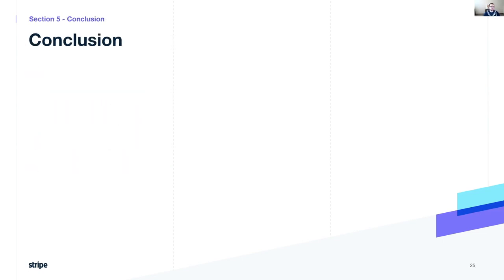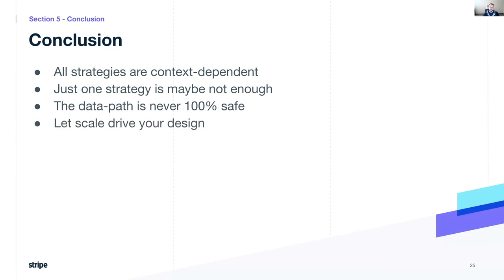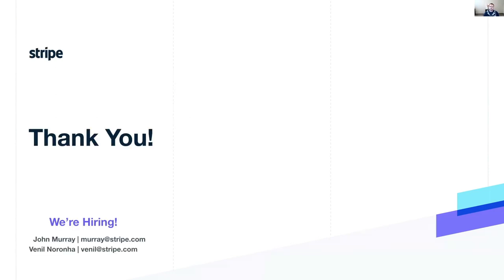So what are the conclusions we can draw? First, all strategies are going to be context dependent — depending on your business use cases and needs, the particular approach or combination of approaches you take will depend on the outcomes you're trying to drive. Another takeaway is that just one strategy may not be enough. Some sort of active-passive health checking combination is likely the best approach for the most holistic health checking strategy. However, it's important to keep in mind the data path is never 100% safe — retries and hedging will continue to remain relevant and useful tools. And lastly, let scale drive your design. Don't over-optimize early on. You may be surprised as your organization grows with the use cases that your customers bring to you. Thank you for attending the talk today. Stripe is hiring — feel free to reach out, and now we can open up for Q&A.